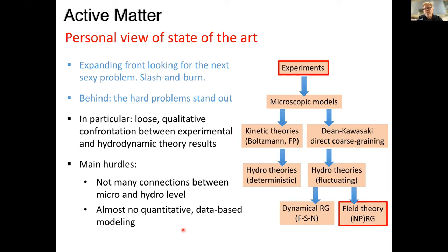So active matter, if you don't know the term, refers to all systems which spend energy to produce work or motion at the level of individual units at the micro level. And I'm interested in the collective properties that are emerging from this. And ideally, you would go step by step from experiments here all the way to microscopic, which is particle-based models.